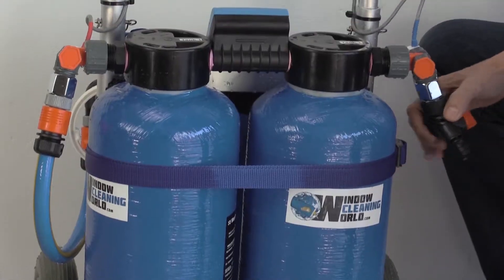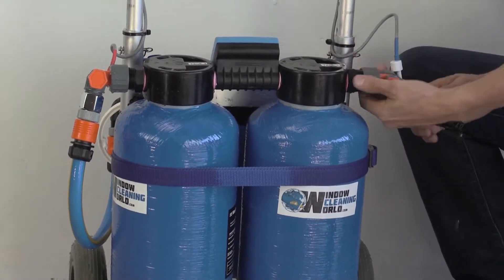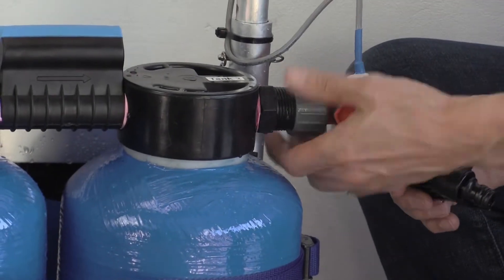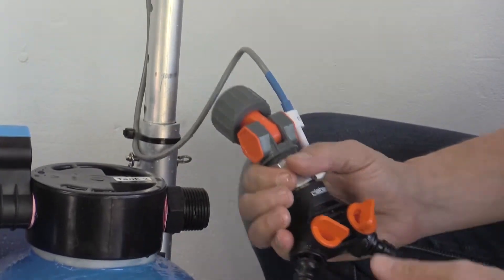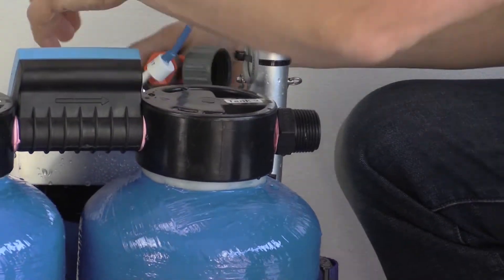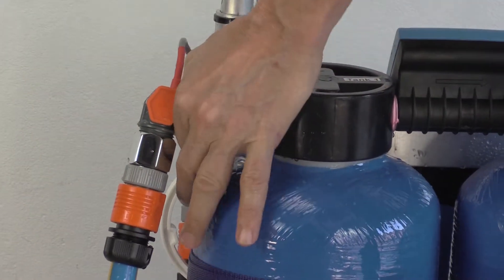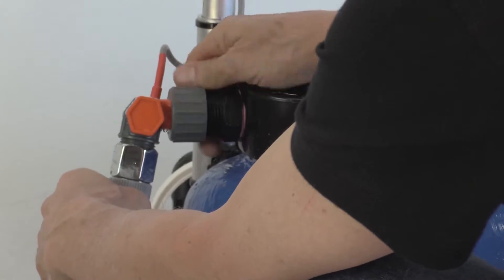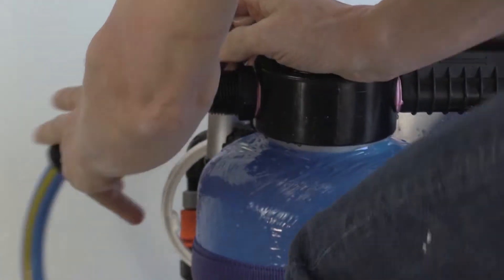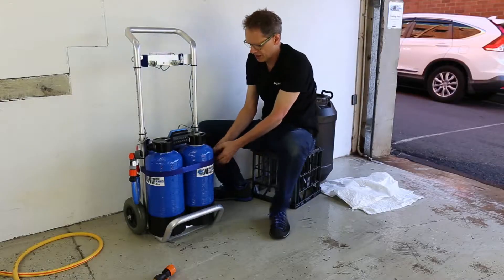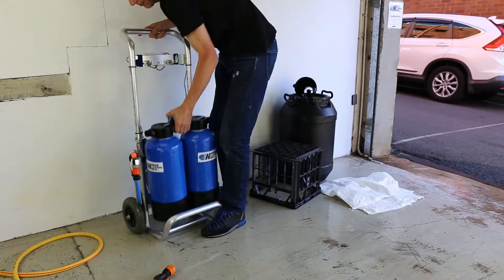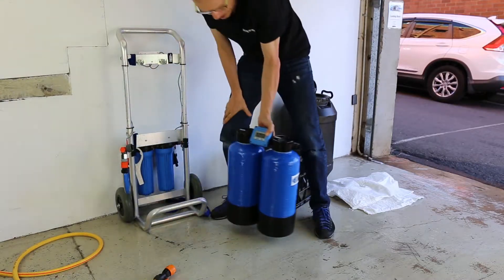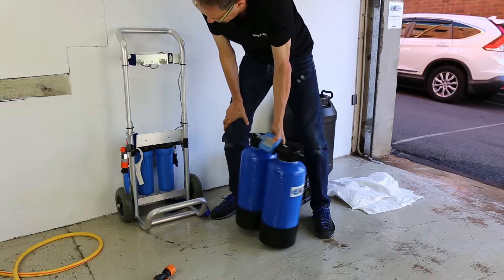So it's pretty easy to do. We'll start by unscrewing the outlet, which by the way is a twin outlet, so you can have two poles running off it. We're just going to set that aside over here. We're going to undo it here as well. So now the two tanks are disconnected. I'll undo the strap, pull that off. Now I can quite easily lift the two tanks up by the combo meter.